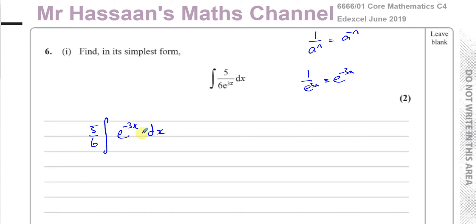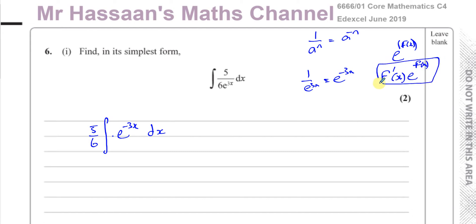When you integrate something like this, you have to make sure that what's outside the function is of the same order as the differential of what's inside the function. For e to the power of some function of x, you need to check that the outside term matches the order of the derivative of the inside. Here, outside is a constant, and if you differentiate minus 3x, you get minus 3 — also a constant. It doesn't have to be the same value, just the same order. So we're fine.